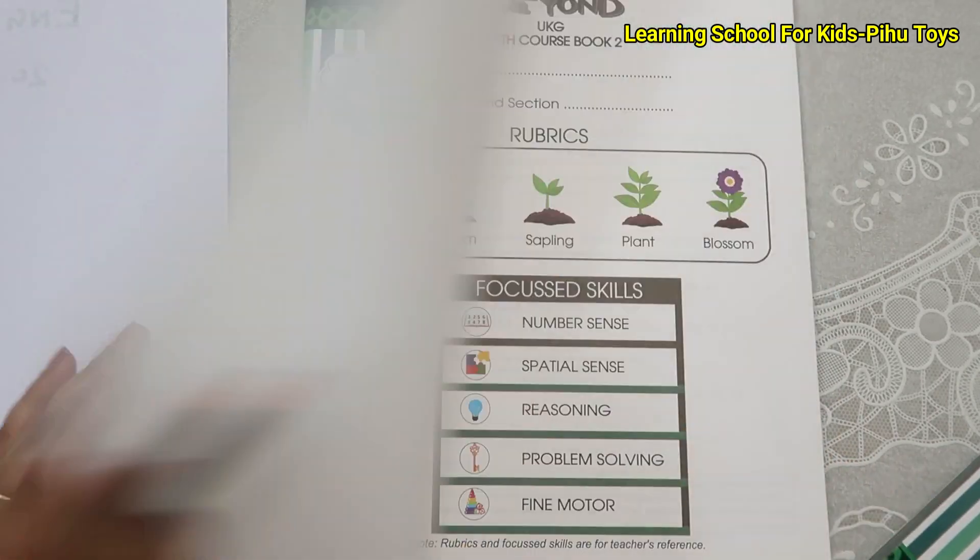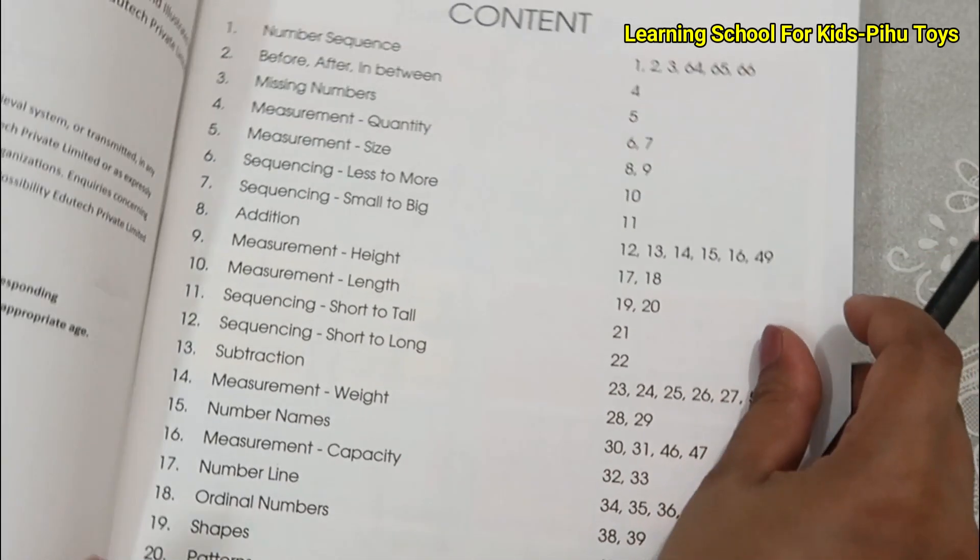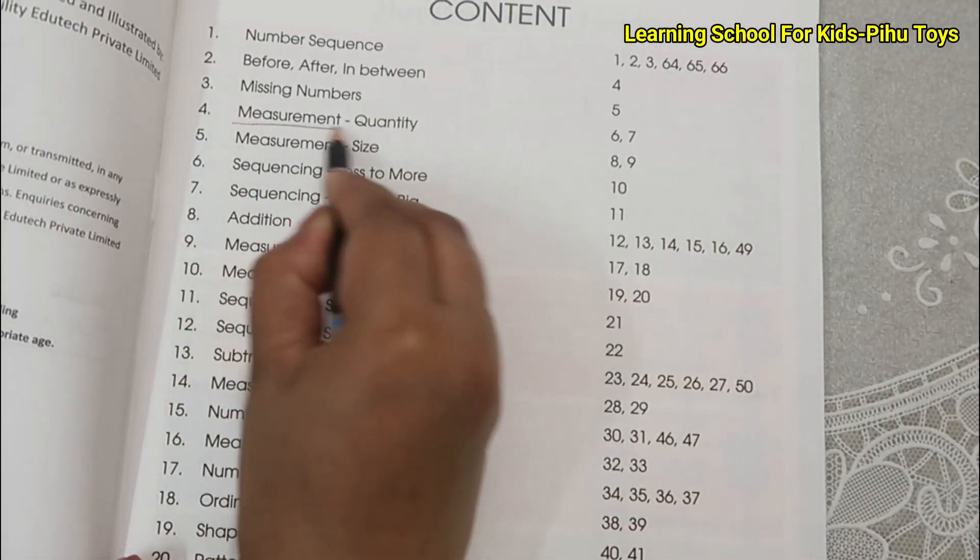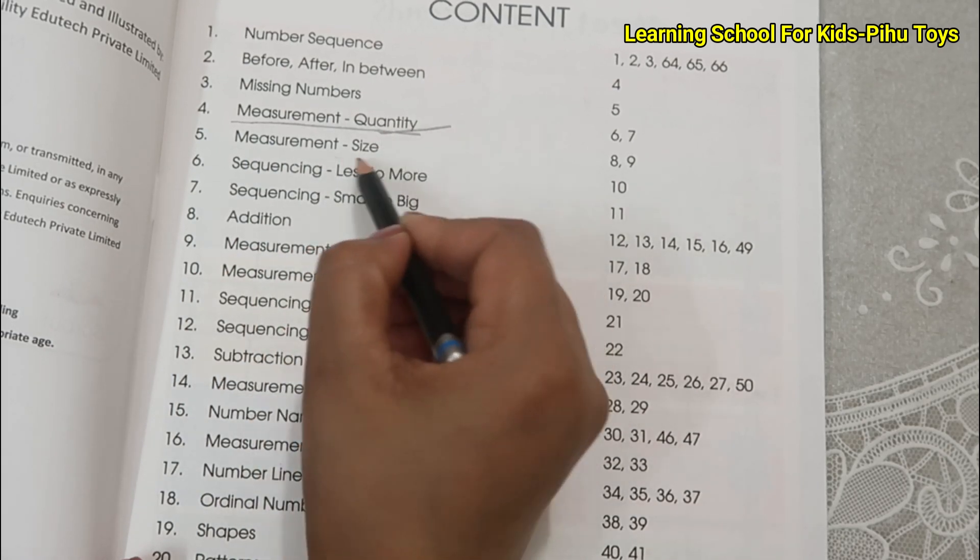Let me show you what they are taught in the second book. We are taught measurement, counting, quantity, size.